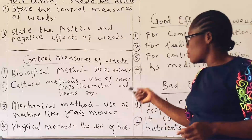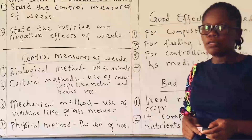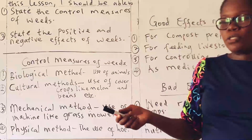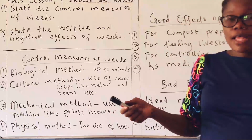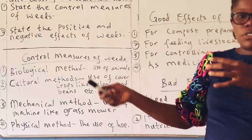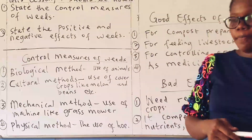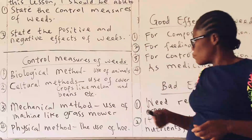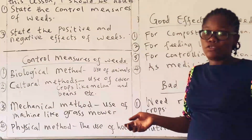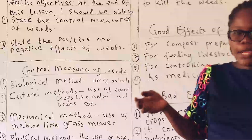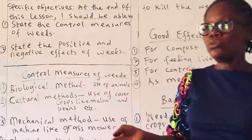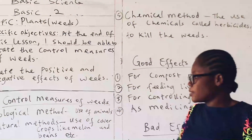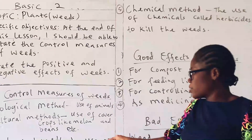Then we have the third one, which is the mechanical method — simply the use of machines to weed the farm, like the grass mower you use to weed around the farm. Then the next method is the physical method, which is the use of a hoe. You can decide to use your hoe, or maybe a cutlass, to clear around the crops.